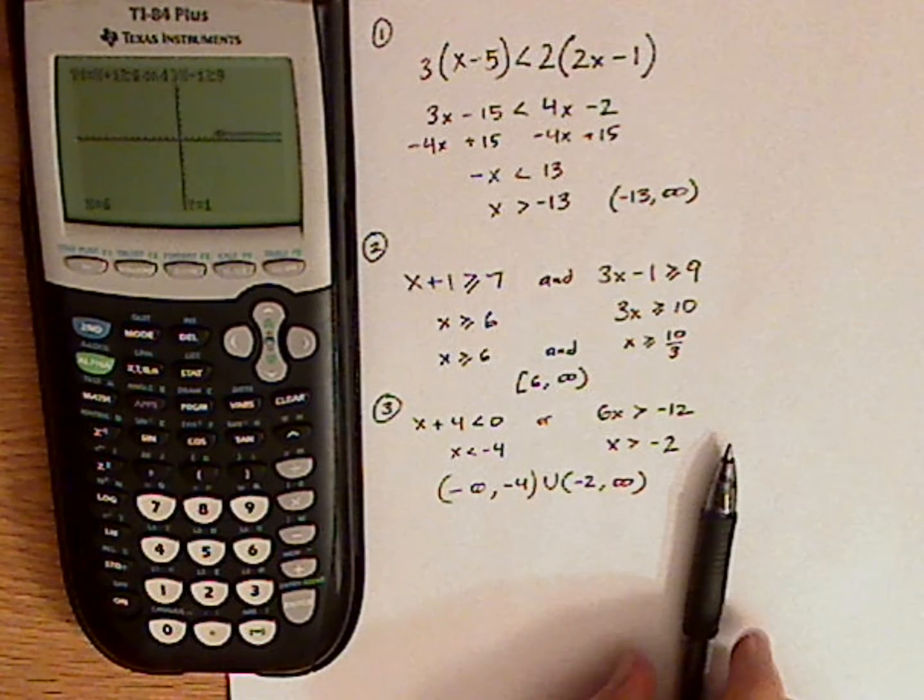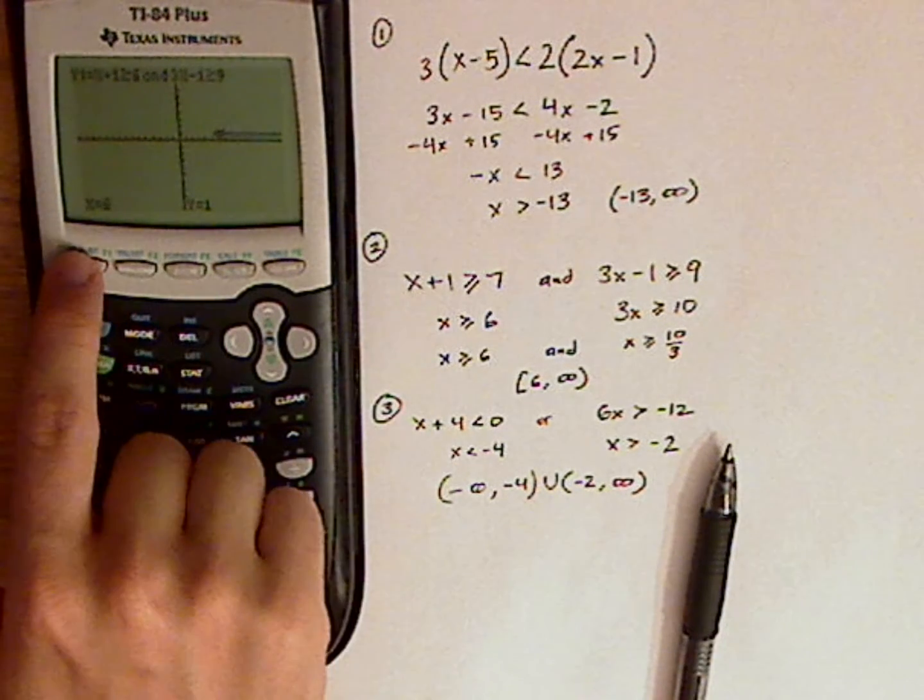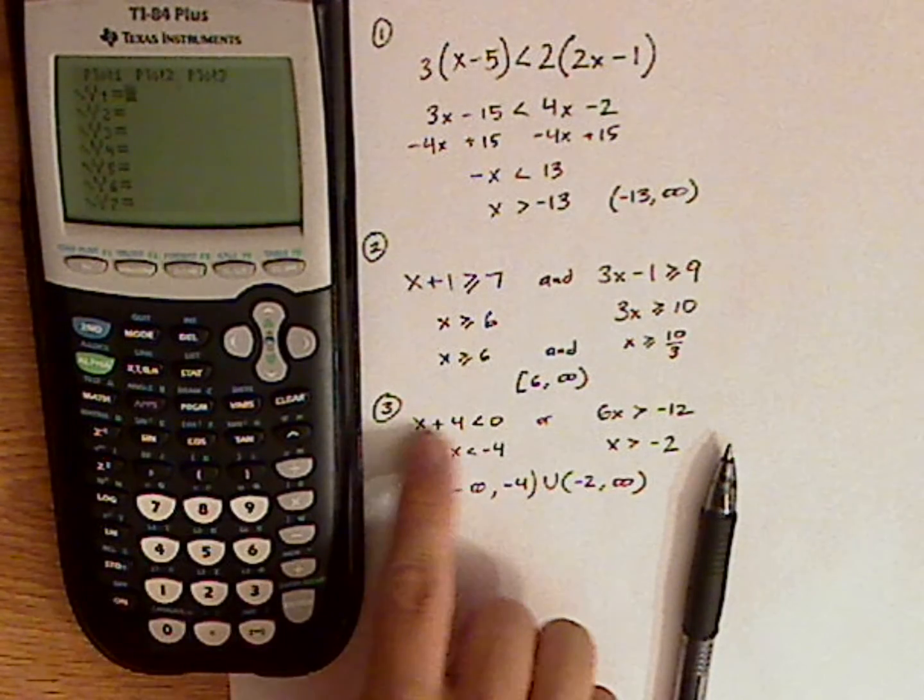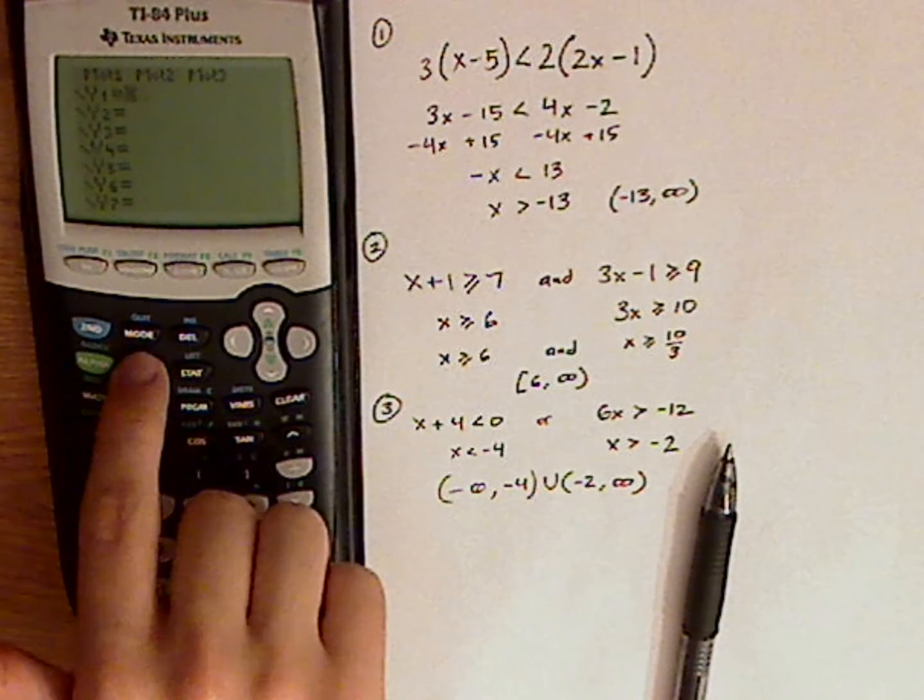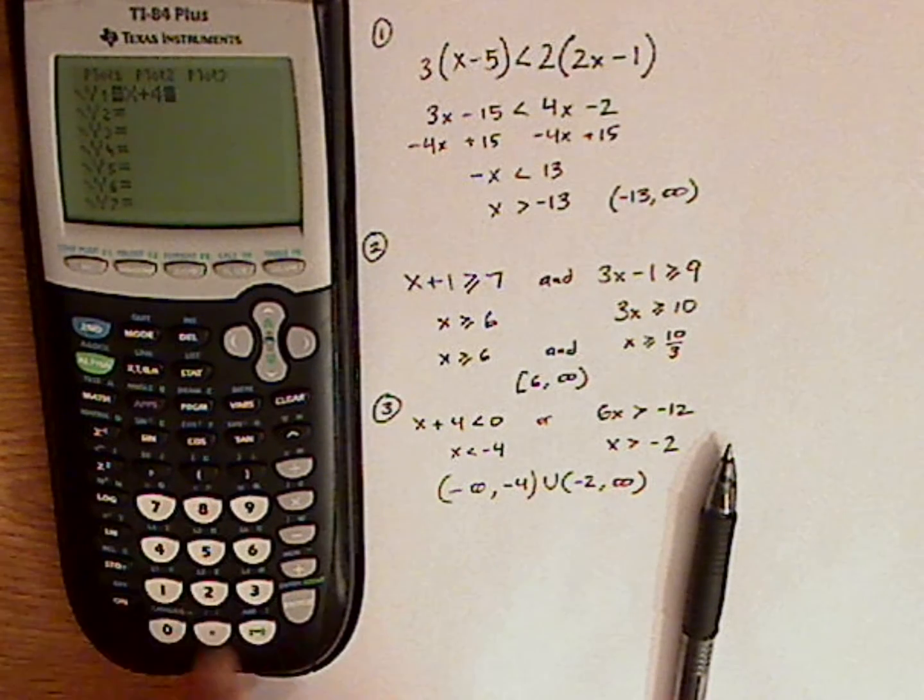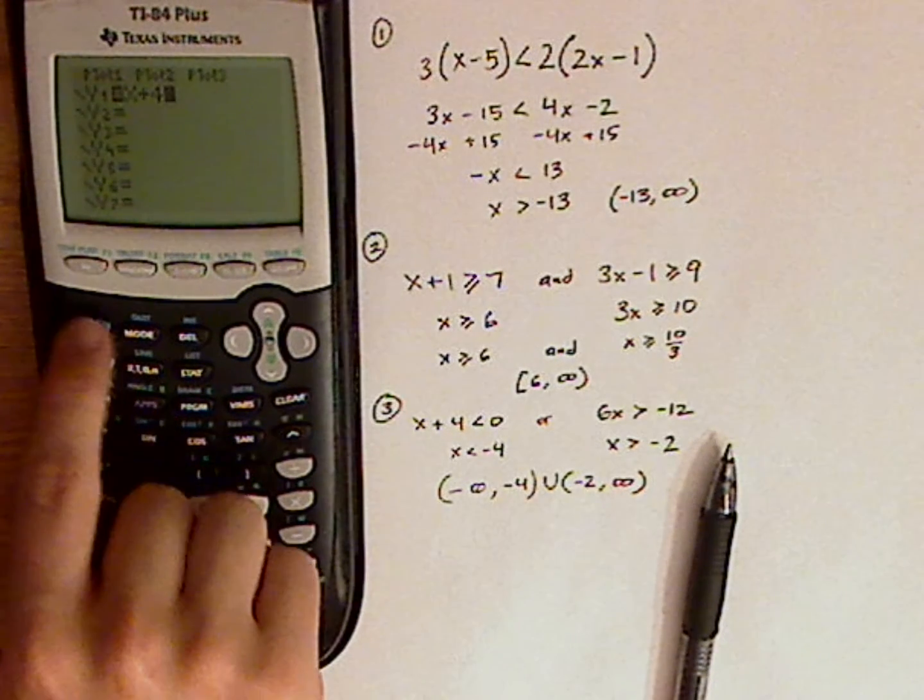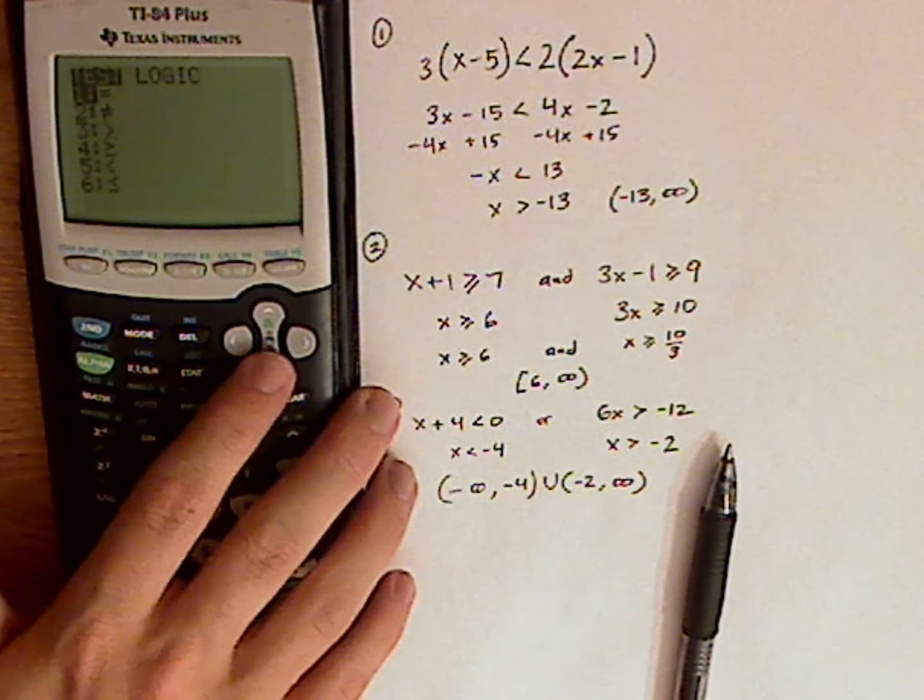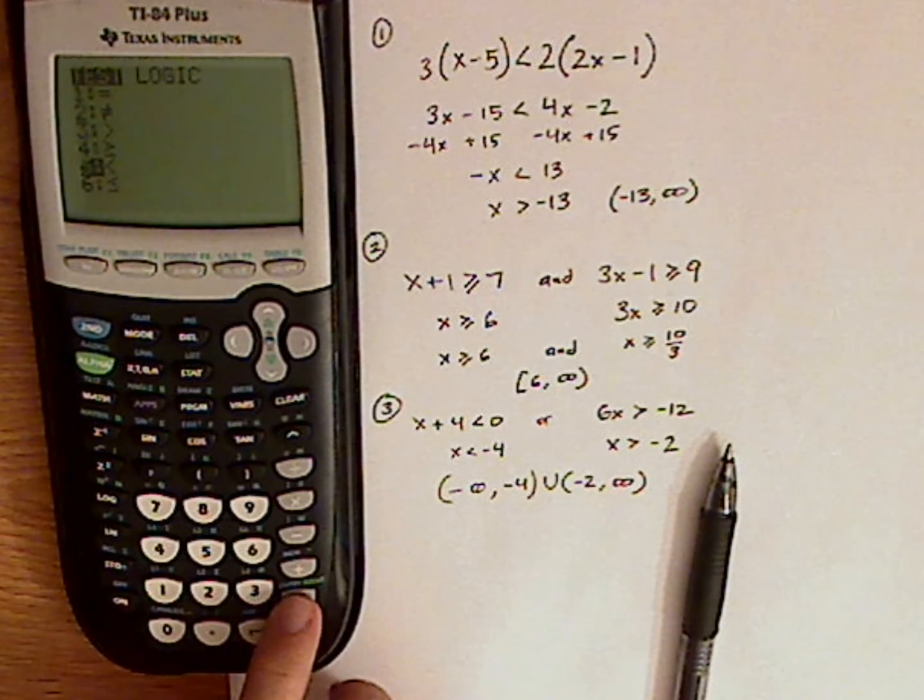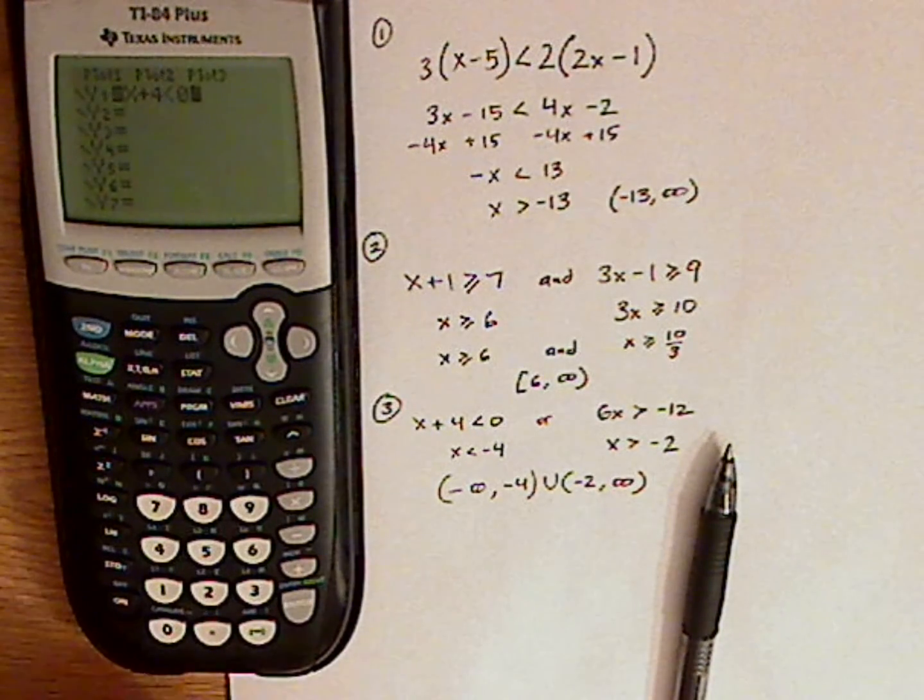So, now let's do this one. Go back to y equals. Hit clear. Same buttons again. Right? Just push it in. So, that's x plus 4. Inequality signs. So, second, math to get the tests. Less than 0.